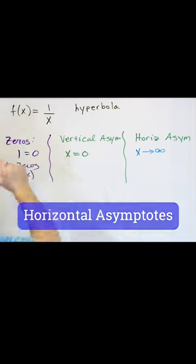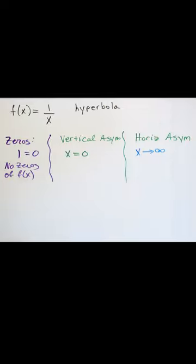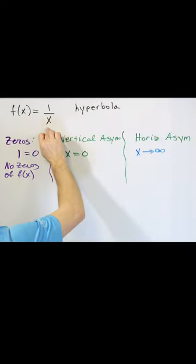Then the value goes to 1 over 100, that's a small number. As x gets even bigger than that, like 1,000, then it's 1 over 1,000. If x goes to a million, then it's 1 over a million.